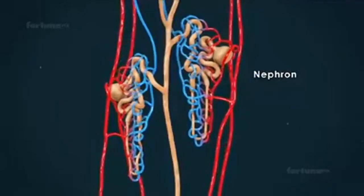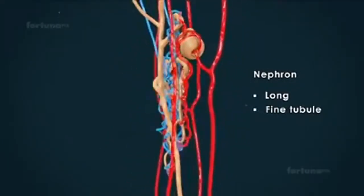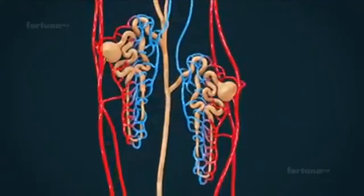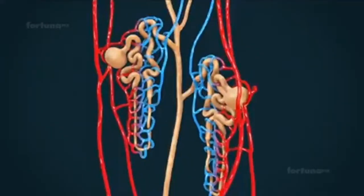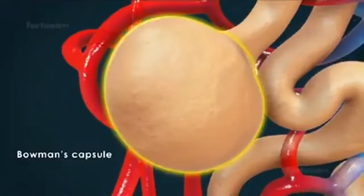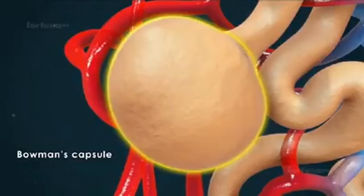Each nephron is a long fine tubule about 30 to 55 millimeters long. One end of which is closed and folded with a double-walled cup-like structure known as the Bowman's capsule. This capsule is located in the renal cortex.